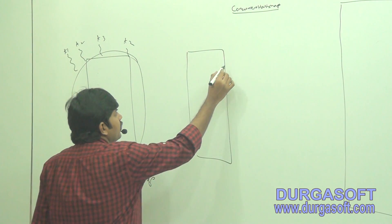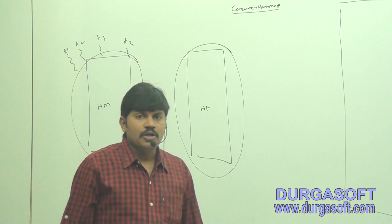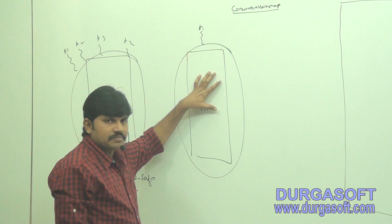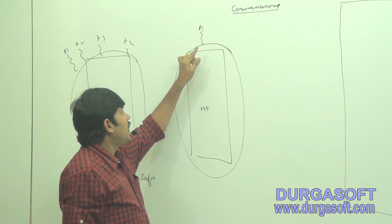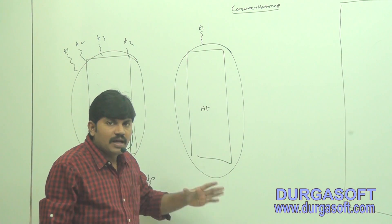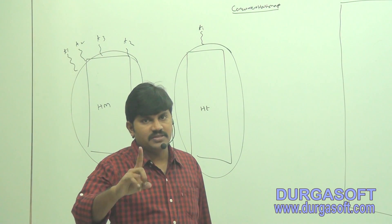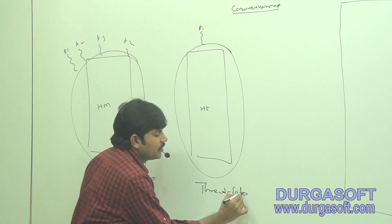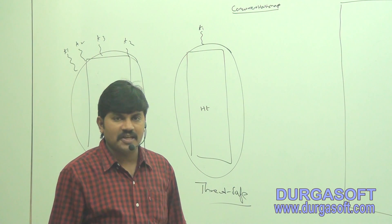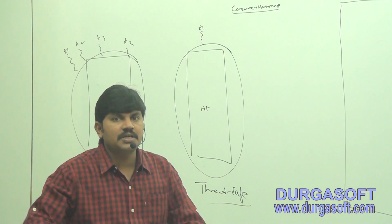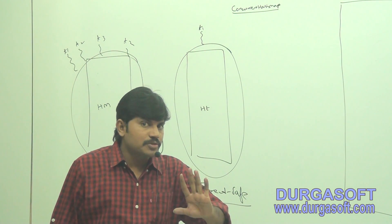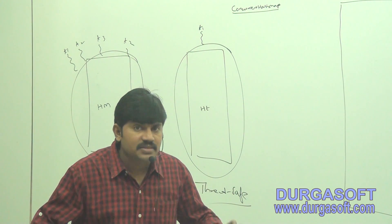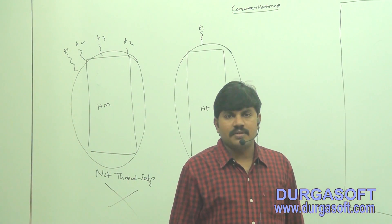In the case of HashTable, to perform any operation — even a read operation — how many threads are allowed to operate? Only one thread. If a first thread is operating and any other thread comes, it should wait until the first thread completes its operation. At a time on the HashTable object, only one thread is allowed to operate. That's why HashTable is thread safe, but the problem is it increases wait time and creates performance problems. To overcome these performance issues in a multi-threaded scalable application, we should go for ConcurrentHashMap.